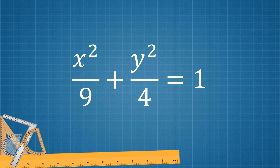Next is x squared over 9 plus y squared over 4 equals 1. Since there are fractions involved, we're going to choose between an ellipse or hyperbola. Since the two terms are separated by a plus sign, that is an ellipse. The orientation is horizontal because the greater denominator is 9 and it is below x squared.